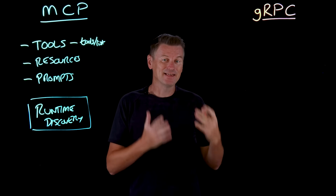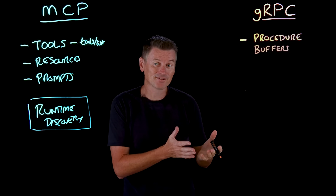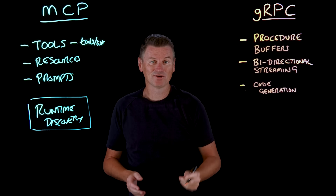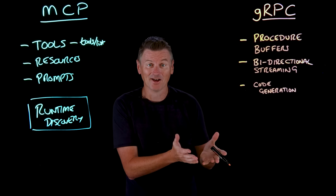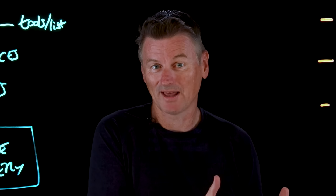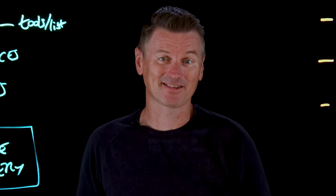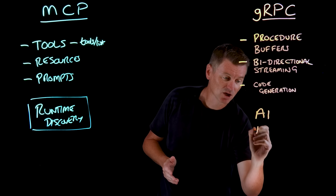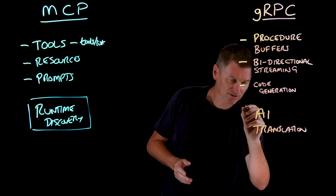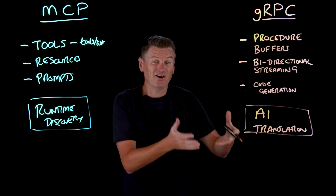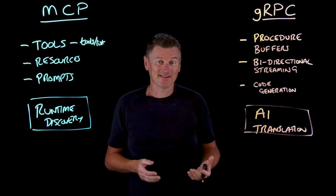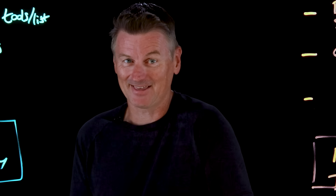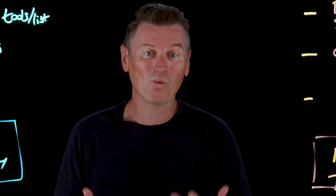gRPC takes a different approach, offering protocol buffers for efficient binary serialization, bi-directional streaming for real-time communication, and code generation. It's fast, reliable, and proven at scale. But gRPC provides structural information rather than the semantic context LLMs need — the when and the why of how to use a service. Developers typically need to add an extra AI translation layer on top, because generic protocols like gRPC were designed for deterministic systems where the caller knows exactly what to call and when. AI agents are probabilistic — they need to understand not just the how, but the what, the when, and the why of each tool.